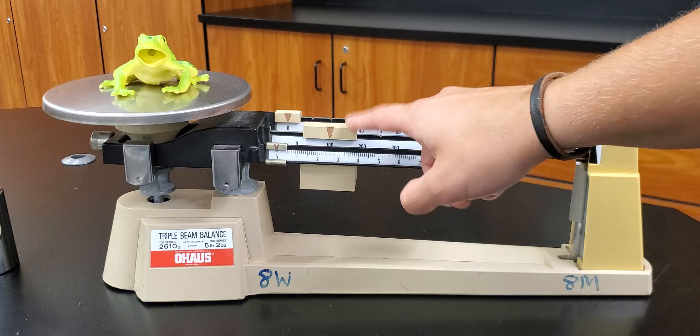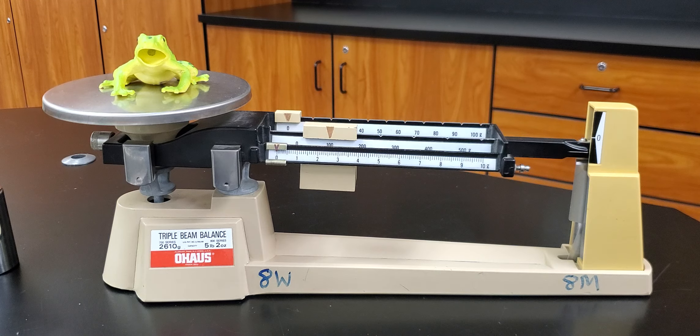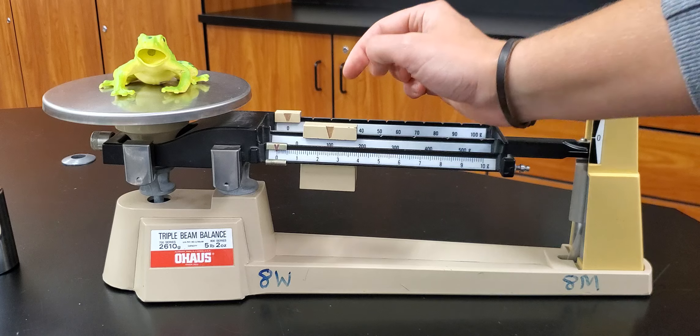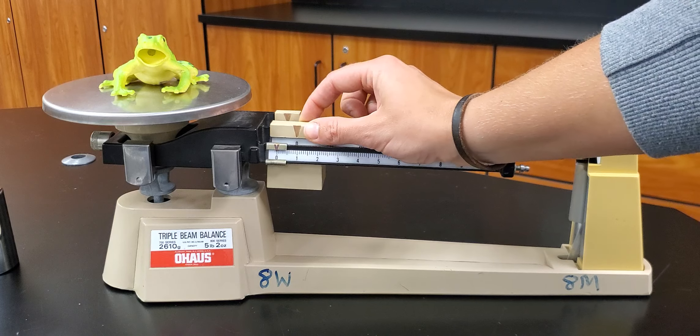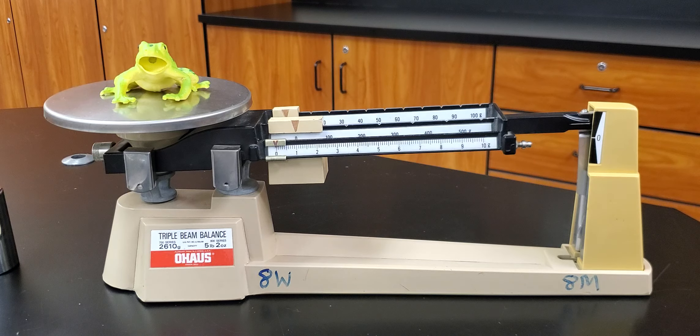So it's clicked into place and if I let that beam go you'll see that the arm moves down. That means I have too much weight here. This frog has a mass of less than 100 grams. So 100 is too much. I'm gonna back it back up to zero and make sure it's in that zero slot.